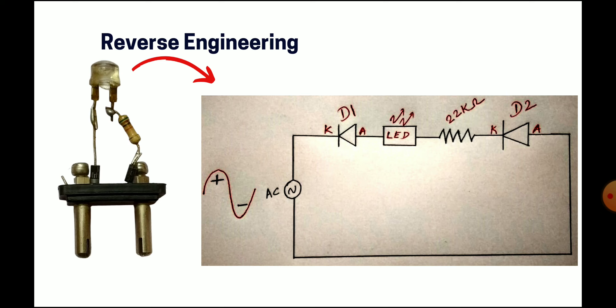In reverse engineering, from the final product we study the operations of the product by separating it into several pieces. From this final product, I have drawn the circuit diagram. As I said, we are giving AC current — alternate current — where positive and negative cycles are there. One section is given to the diode. As we are using two diodes, I name them D1 and D2.